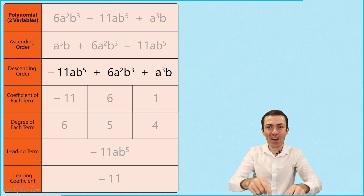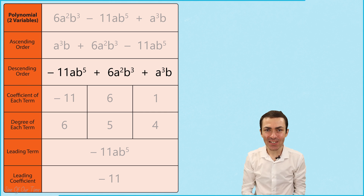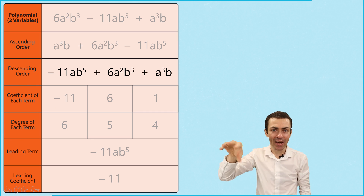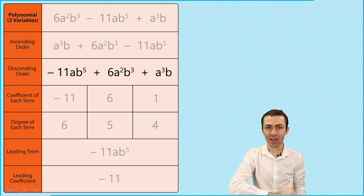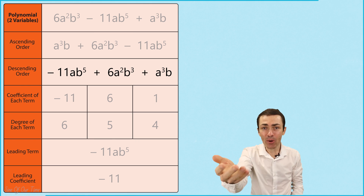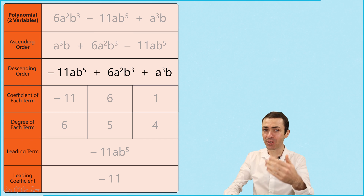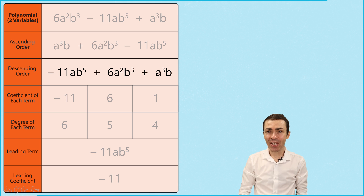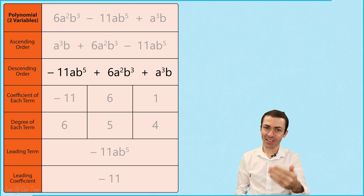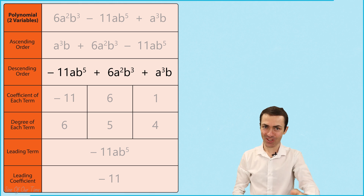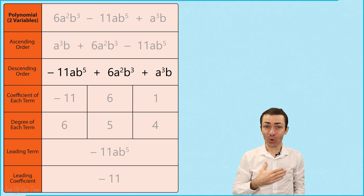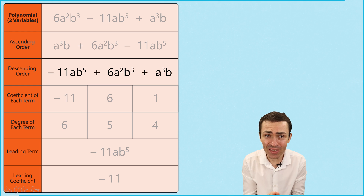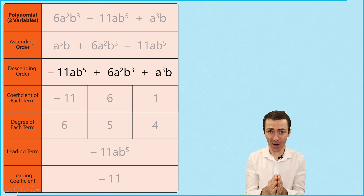I hope that you now have a better understanding of how to write polynomials in ascending and descending order, how to get the coefficients and the degrees of each term, and finally how to get the leading term as well as the leading coefficient. Well, that's all from me, and I want to say a very big thank you for watching.